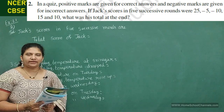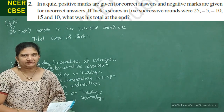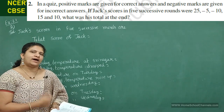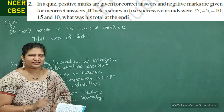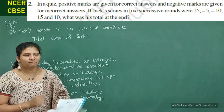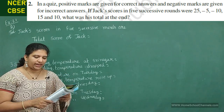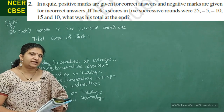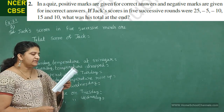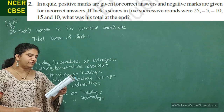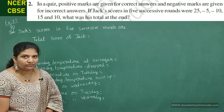Second question: in a quiz, positive marks are given for correct answers and negative marks for incorrect answers. If you answer correctly you get positive marks; if wrong, marks are deducted — that is negative marks. Jack participated in 5 successive rounds and scored: 25, minus 5, minus 10, 15, and 10. What was his total at the end? Understand the question carefully — we need to find his total score.